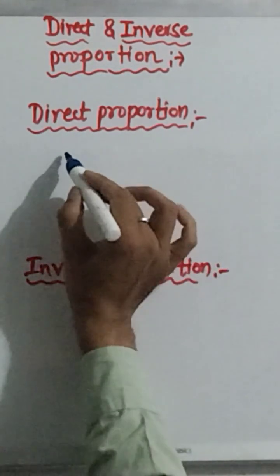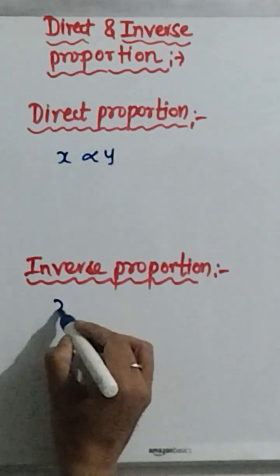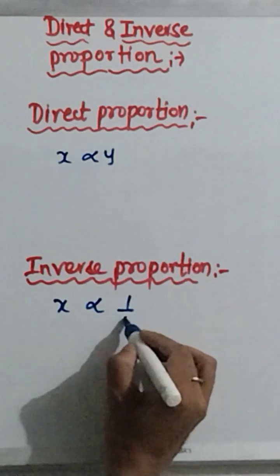Here, if we have two variables, then x proportional to y - this is the direct proportion. And inverse means x proportional to 1 upon y.